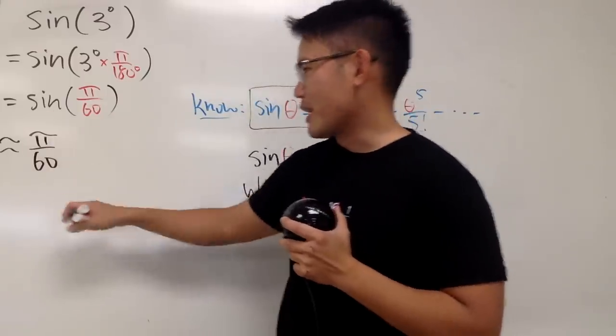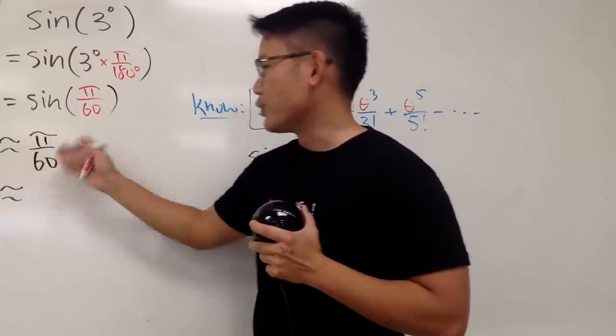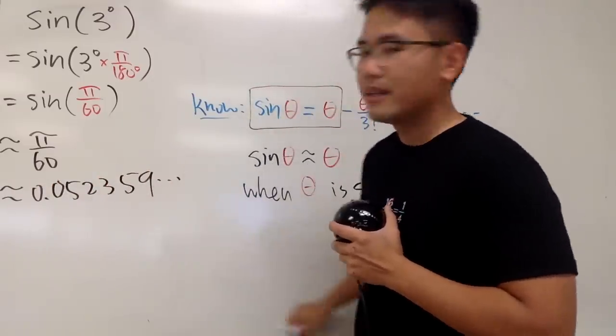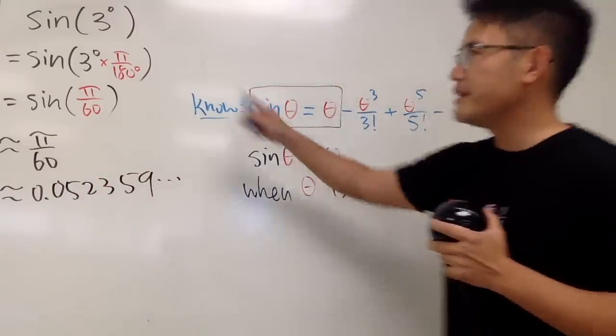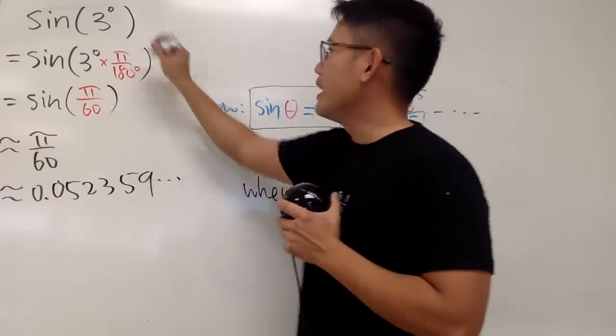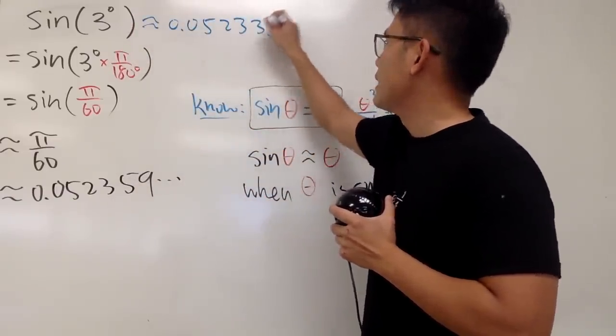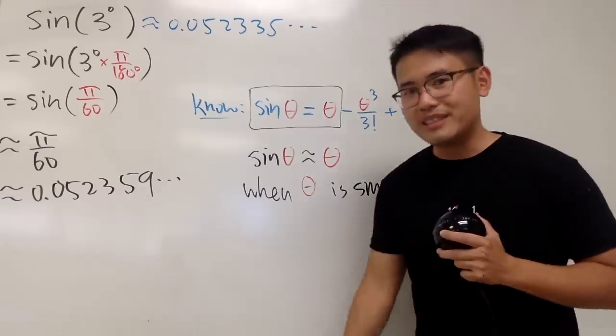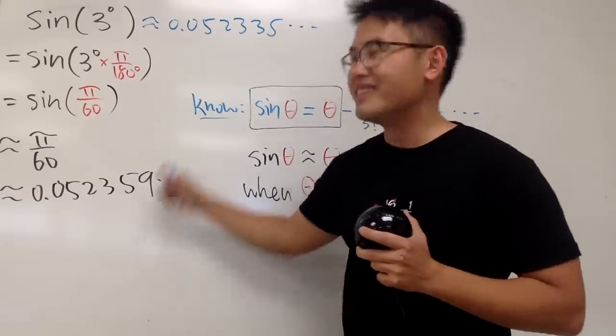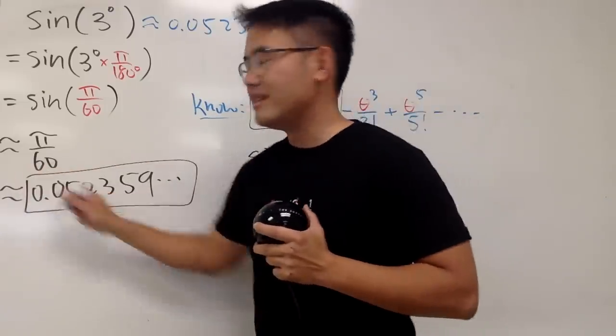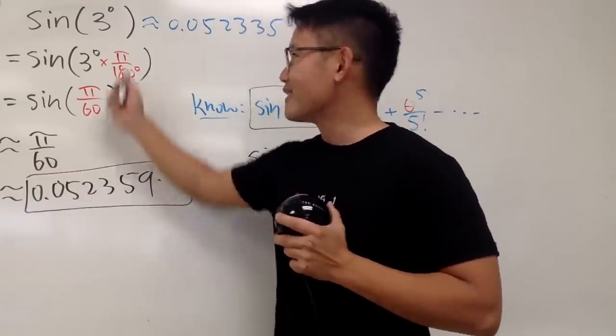And of course, you can just use the calculator right here. If you do the approximation, you get 0.052359 and so on. And if you use the calculator to do this right here, you get approximately 0.052335 and so on. As you can see, this is pretty good. Therefore, there you have it. This right here is the approximation answer for that.